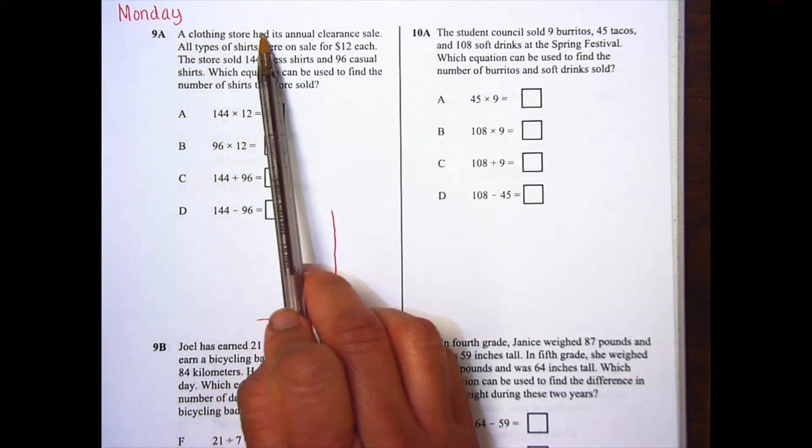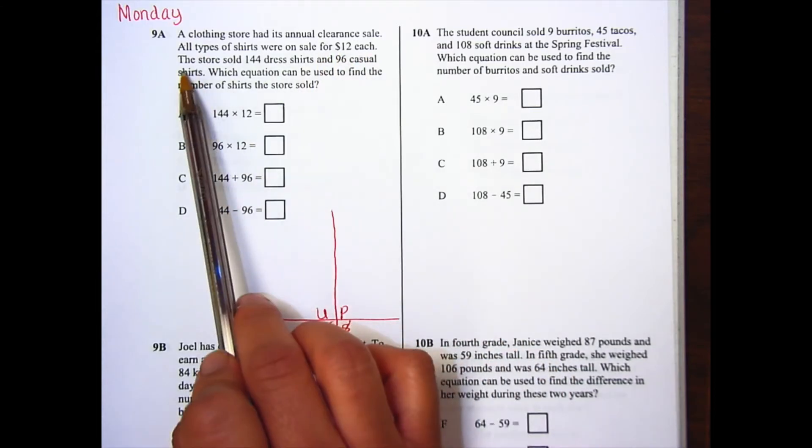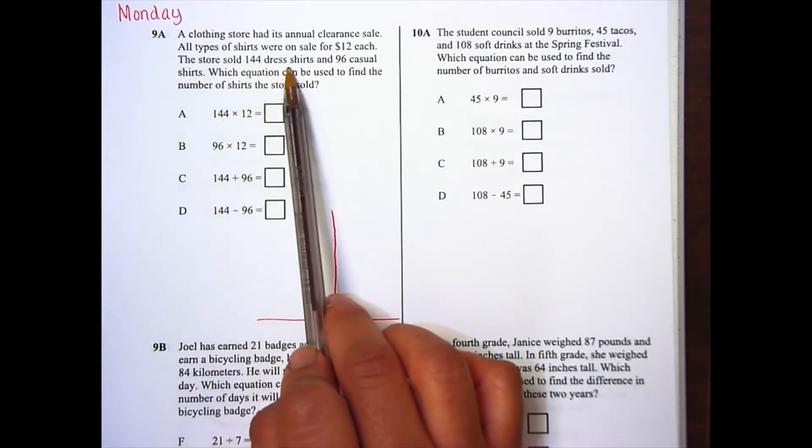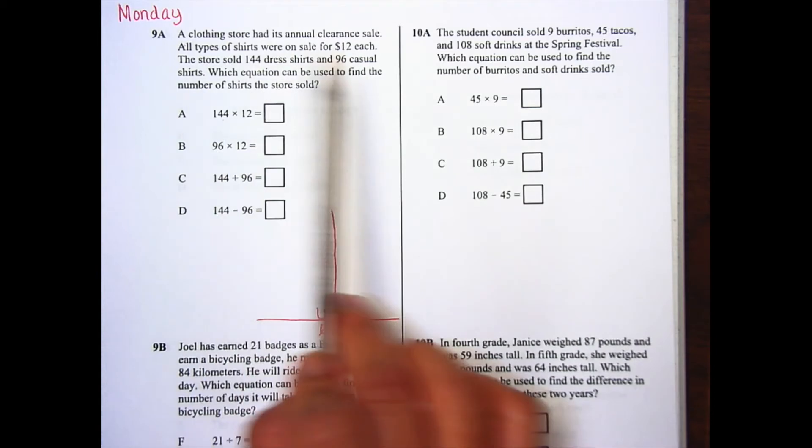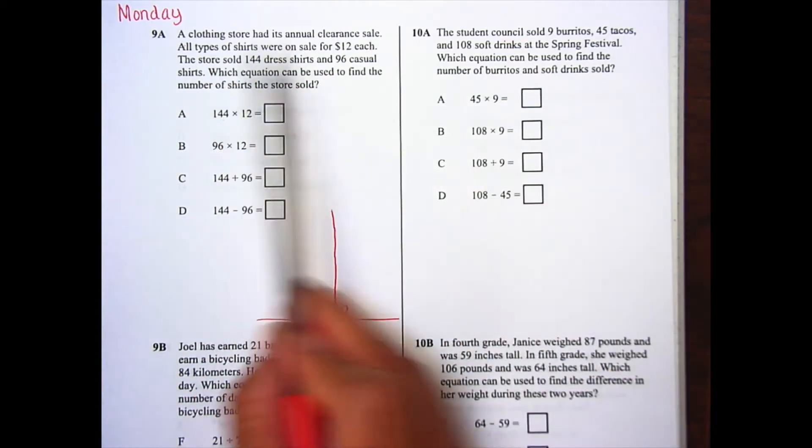So our understand, our first step is to read our word problem. A clothing store had its annual clearance sale. All types of shirts were on sale for $12 each. Store sold 144 dress shirts and 96 casual shirts. Which equation can be used to find the number of shirts the store sold? So we read it.